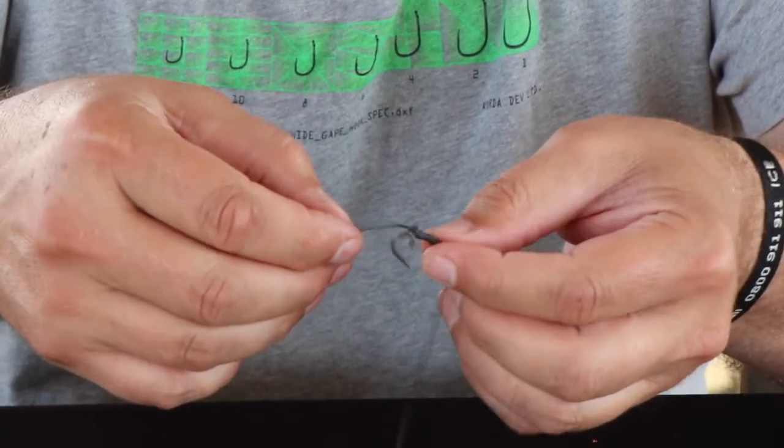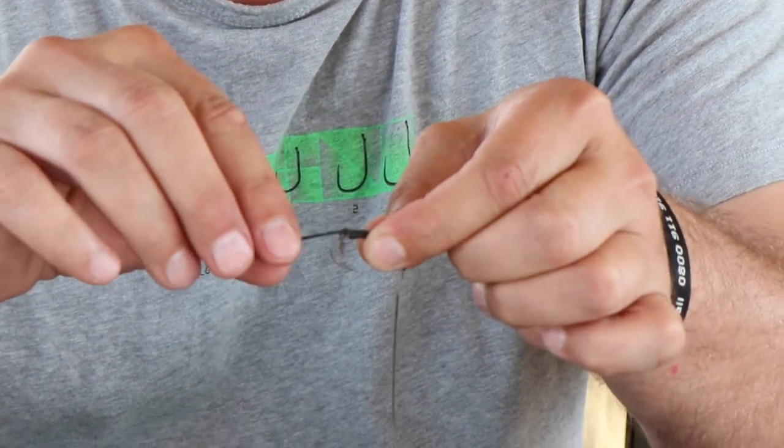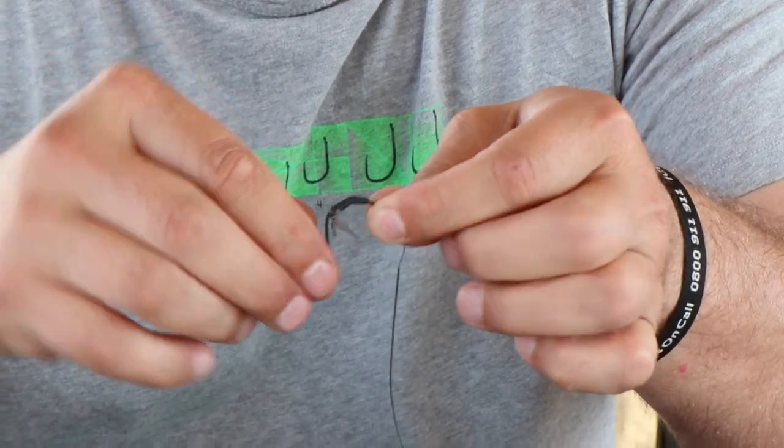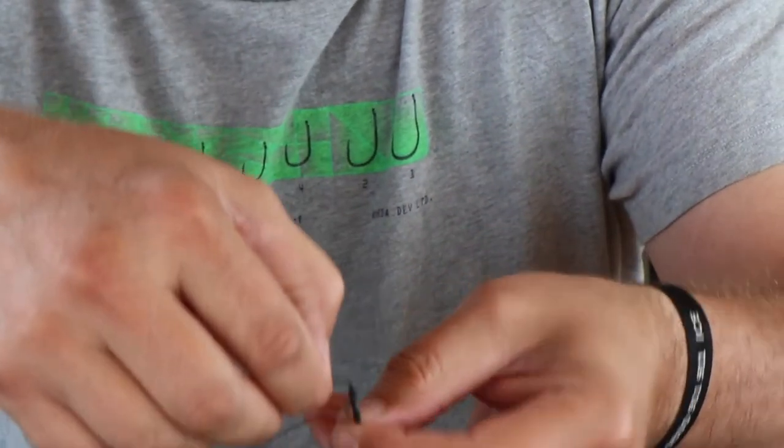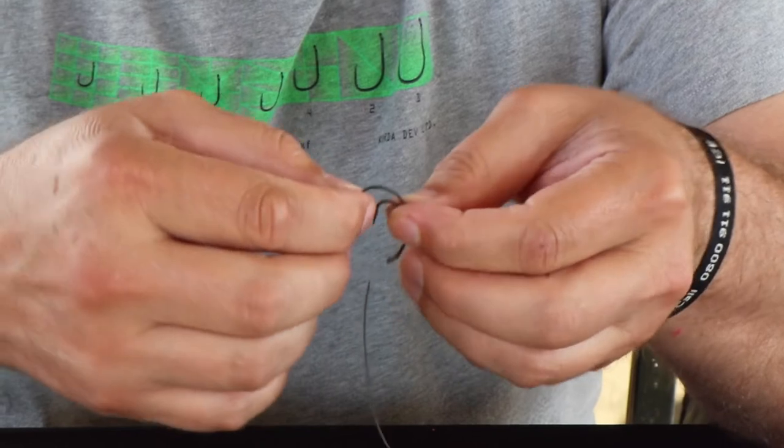And then you see the D-rig kicker has got a flat end and a rounded end. So I'm going to bend that rounded end around the hook point. Come on swivel, get out of the way there. Just like that.